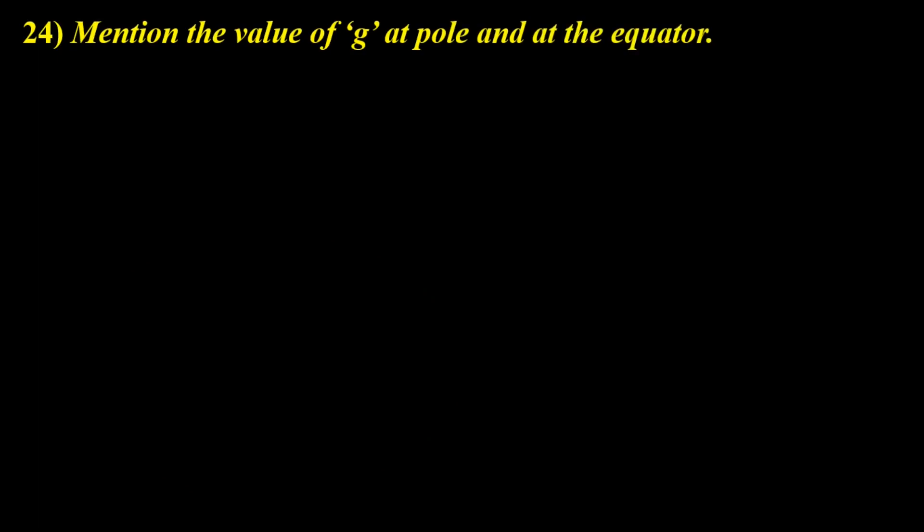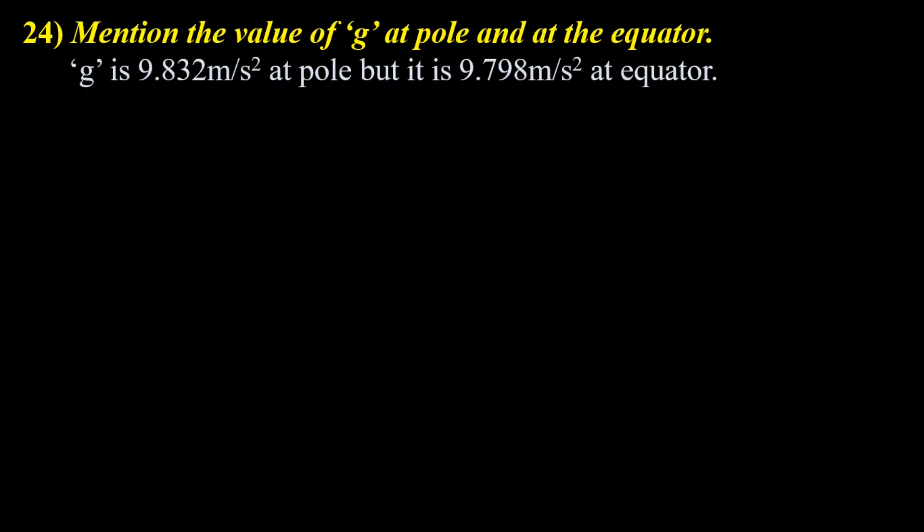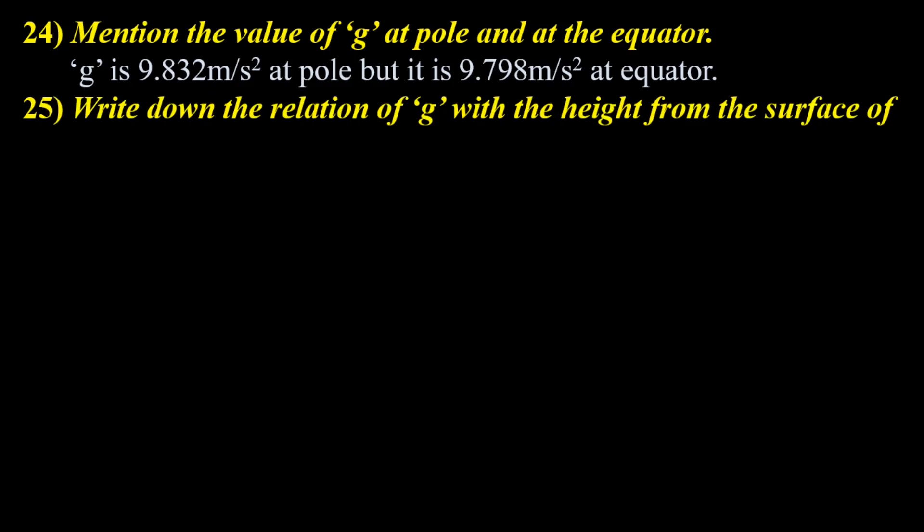Question number 24: Mention the value of g at the pole and at the equator. This is a very short question. g is 9.832 m/s² at the pole, but it is 9.798 m/s² at the equator.